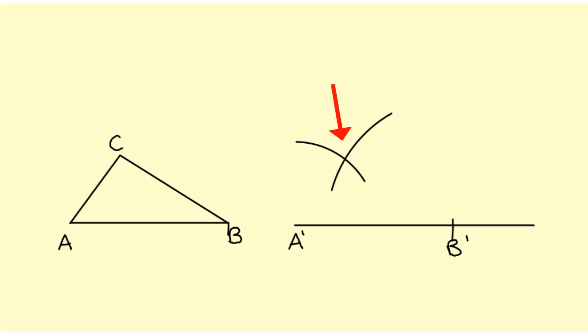Where those two arcs intersect is the only point that will have a side the length of AC and a side the length of BC.